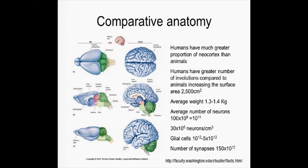The surface area of the whole brain is about 2,500 centimeters squared. I'm told this is like two large pizzas, one for each side. The average weight is about 1.3 to 1.4 kilograms, slightly different weights for men and women.